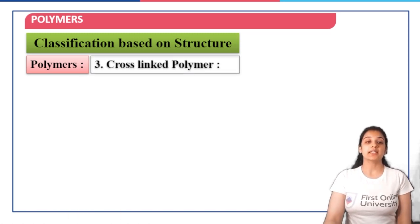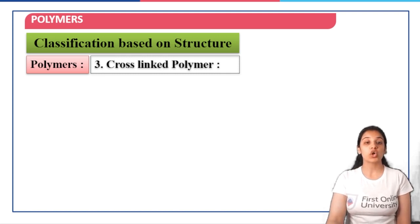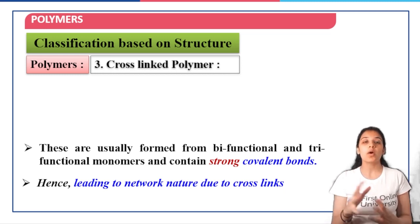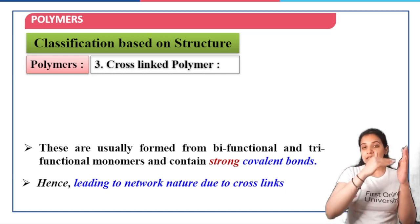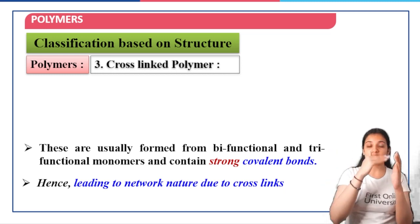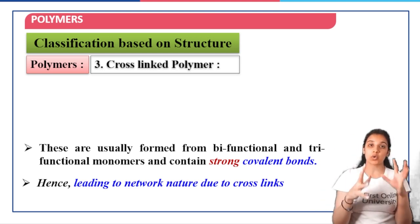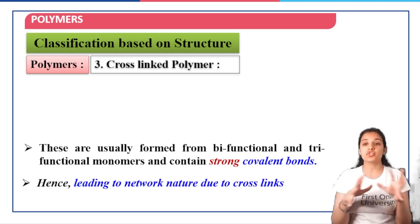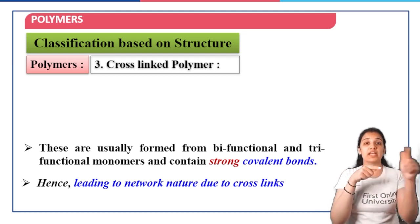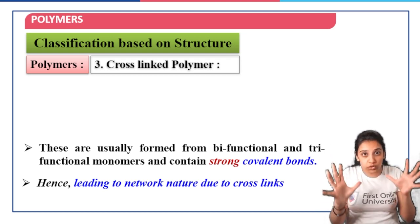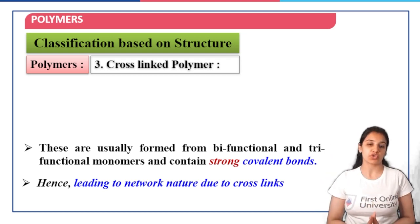The third category of the classification based on structure is the cross-linked polymers. The picture seems to be missing here. What happens is — similar to linear polymers which are continuous chains — cross-links are formed where different chains are linked to one another through various bonding, forming a three-dimensional network structure.